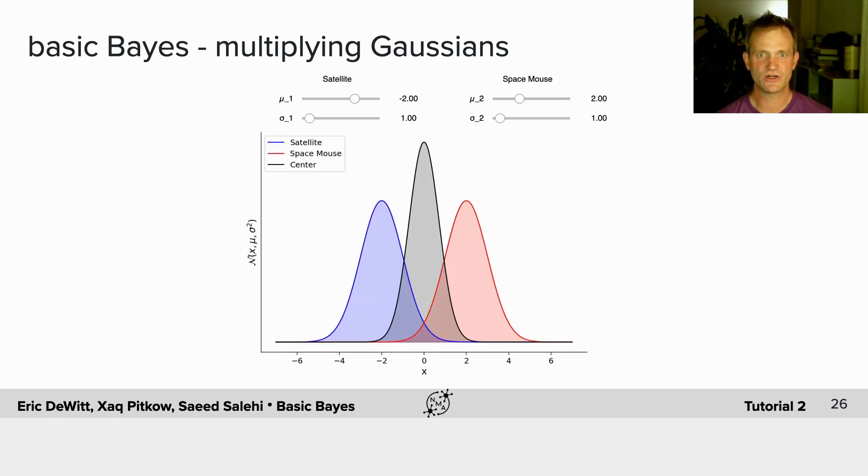So you're going to explore how this works by multiplying the two Gaussians seen here, one is the satellite, the other is the space mouse, to find the center of them.